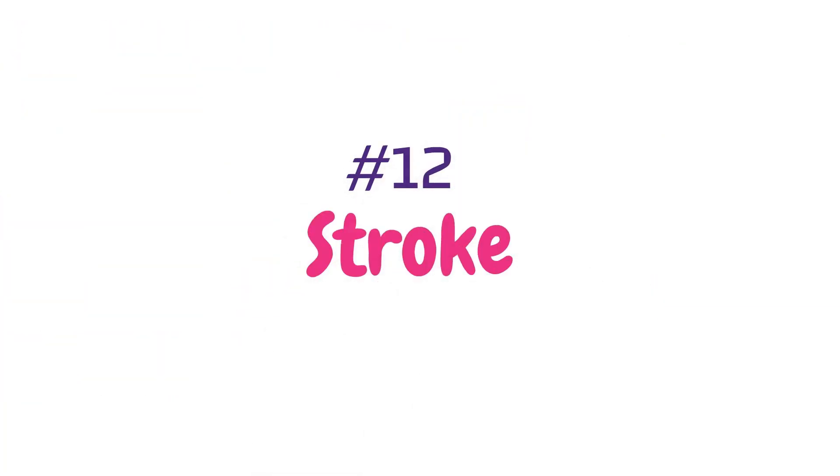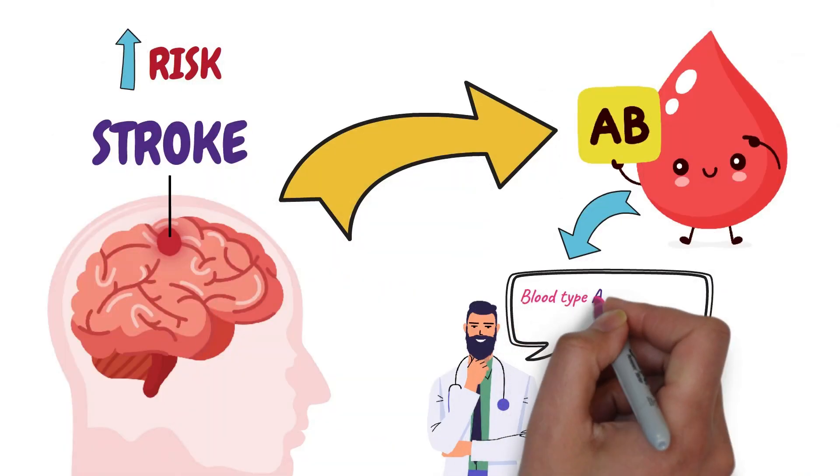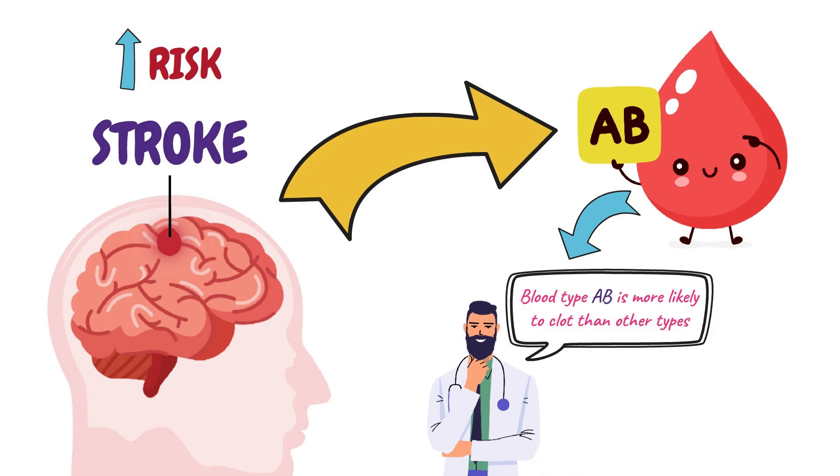Number twelve, stroke. Your risk for a stroke goes up if you have blood type A or B. Doctors think that because it's more likely to clot than any other type of blood.